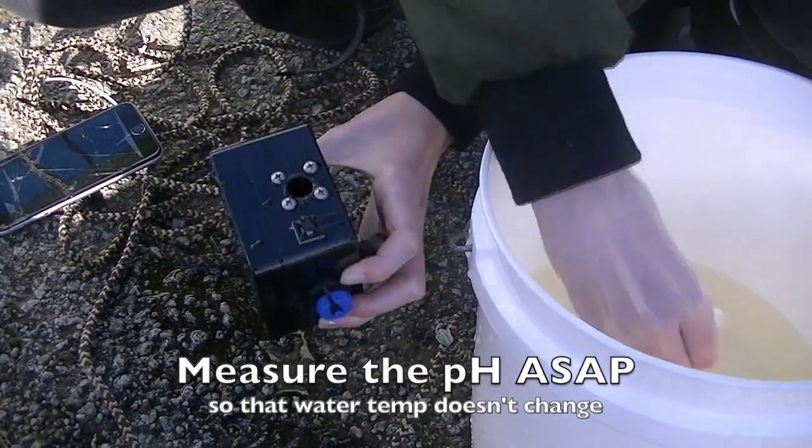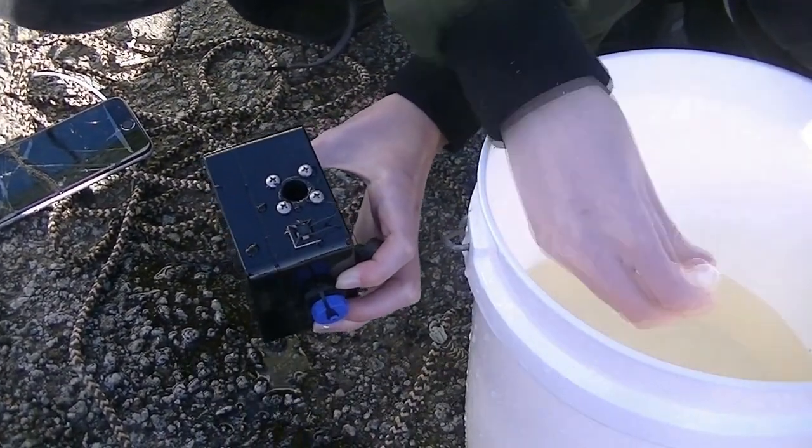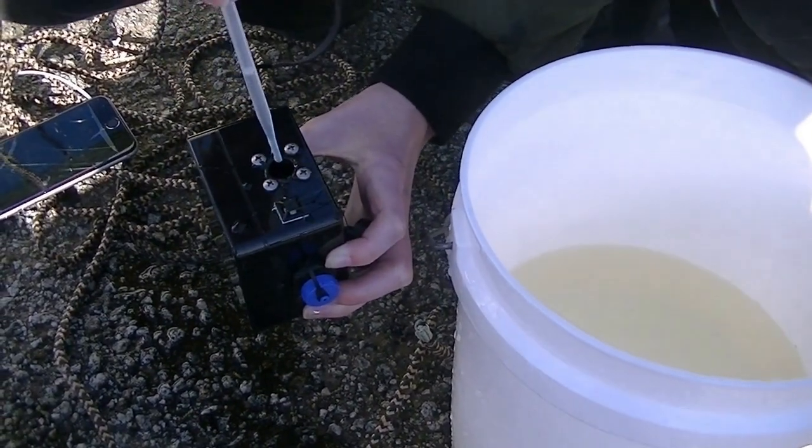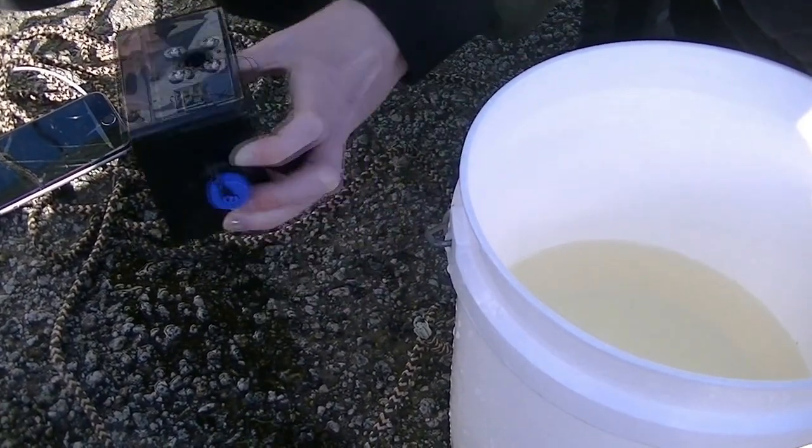Now we're ready to measure pH with the Phyta. First, rinse the cell out three times with seawater to bring the cell to the correct temperature.